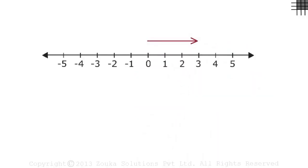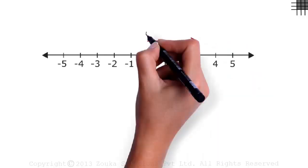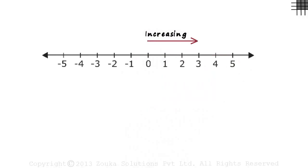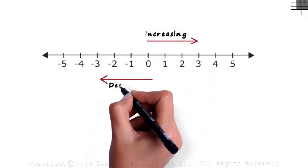When we move towards the right on a number line, the numbers keep increasing. And as we move towards the left, the numbers keep decreasing.